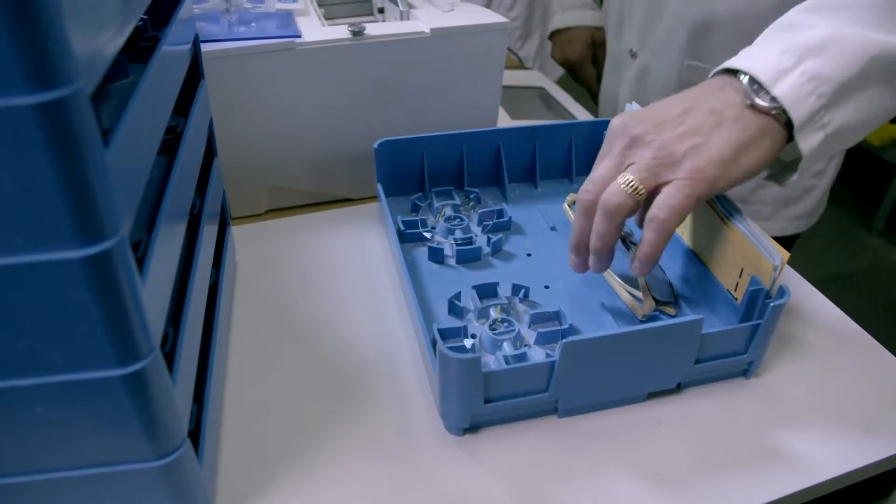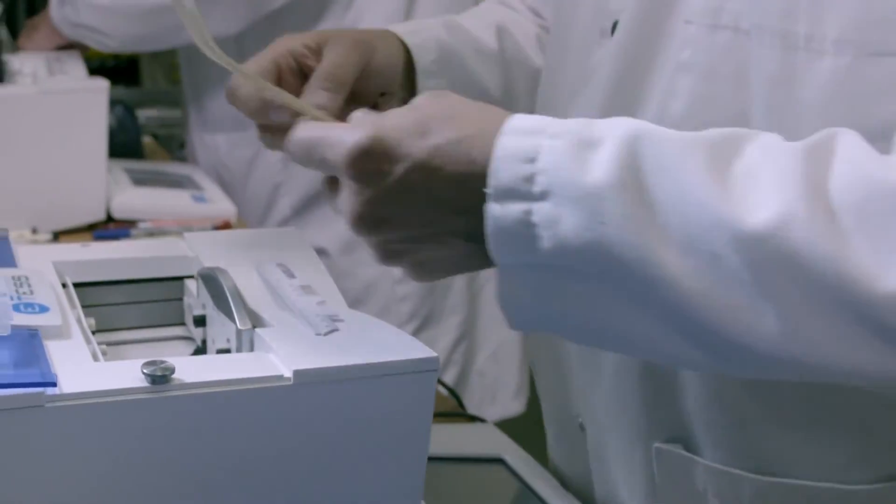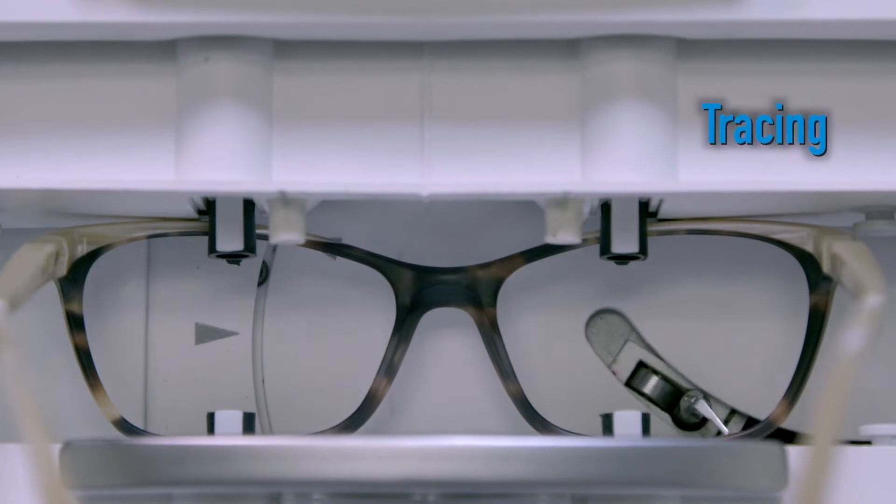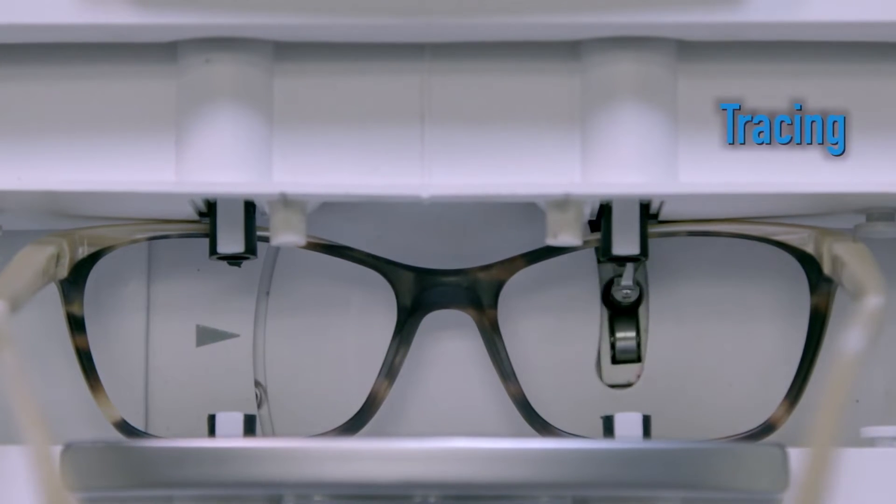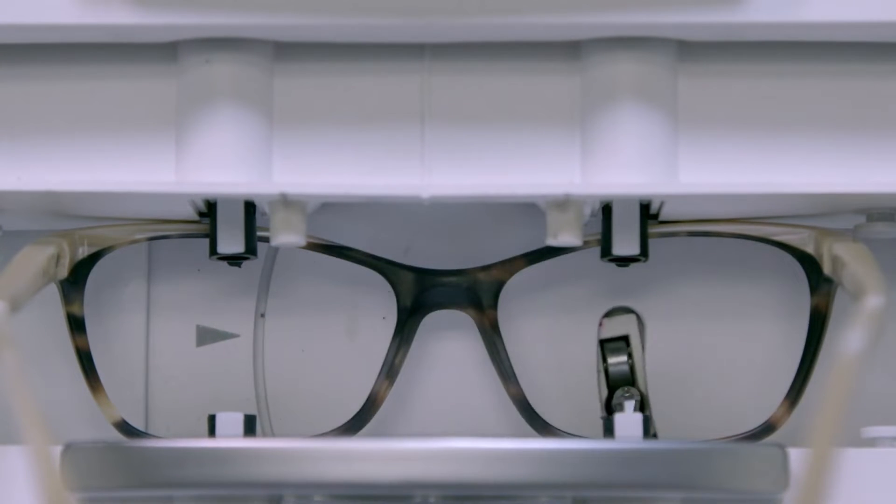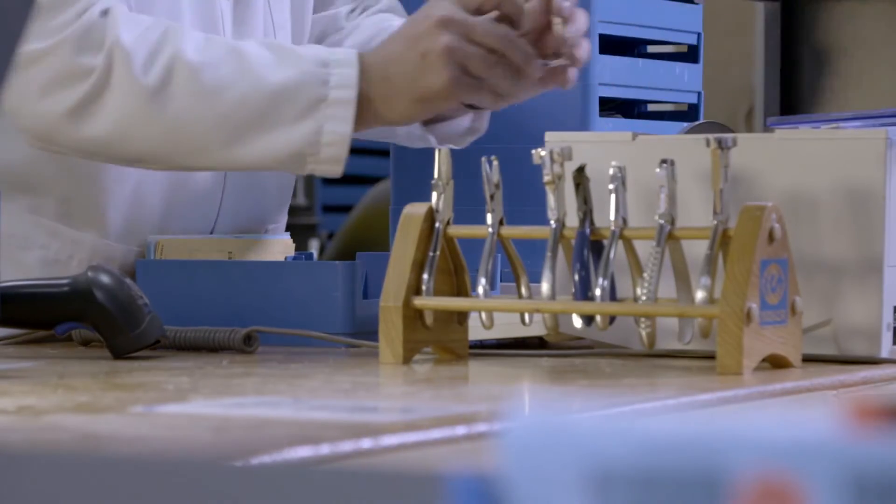Your frame and the ordered lenses are associated at this step. The 3D shape of the frame is acquired by a digital tracer with a sensitive probe. The shape is automatically sent to the edging equipment.